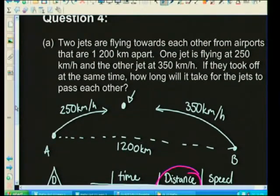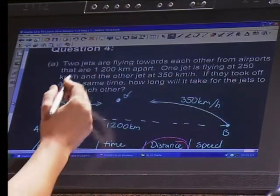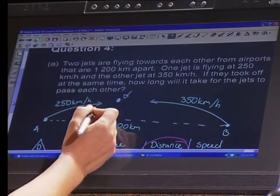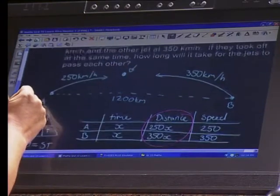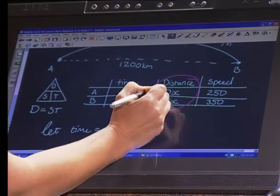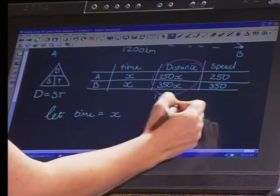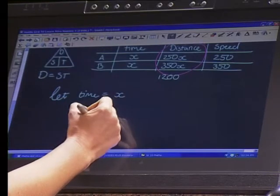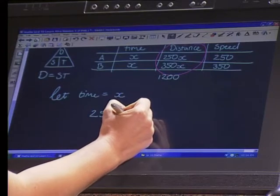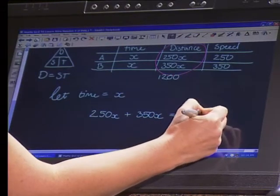Let's make sure we've used all of the information. Two jets are flying towards each other from airports that are 1,200 kilometers apart. One jet is flying 250 kilometers an hour, the other jet at 350 kilometers an hour. If they took off at the same time, how long would it take for the jets to pass each other? The only information we haven't used is the 1,200 kilometers. Now we know that when they reach each other, they are going to have flown a combined distance of 1,200 kilometers. That means our equation is going to be plane A's distance plus plane B's distance equals 1,200 kilometers.